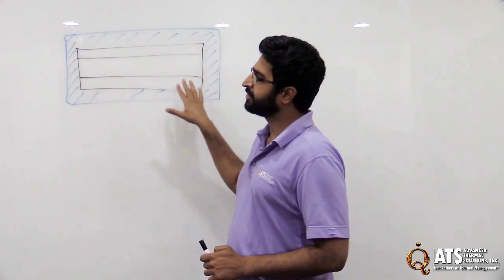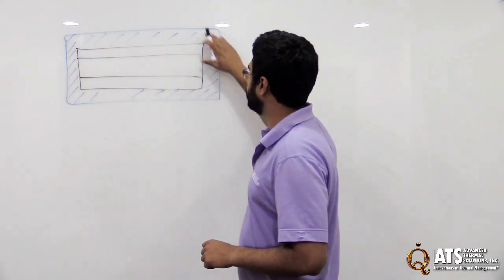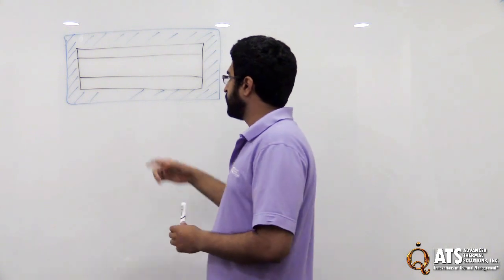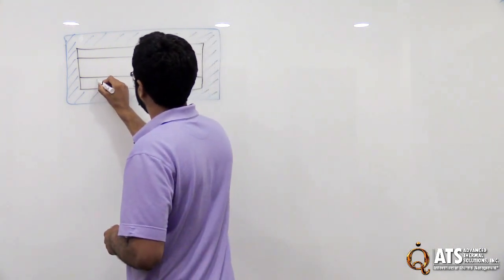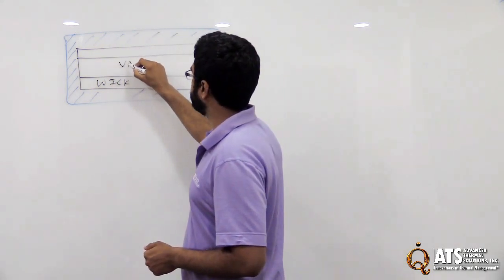So here we have just a 2D cross section of the heat pipe. On the outside you have the casing. So generally that's copper, but it could be anything else. On the inside here you have your wicking structure. And over here you have your vapor space.